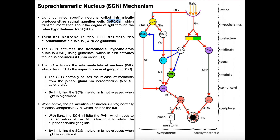These cells are not the ones responsible for color discrimination or color vision. Their major function is to transmit information about how much light there is to the brain. They're going to transmit that information through something called the retinohypothalamic tract, or RHT.